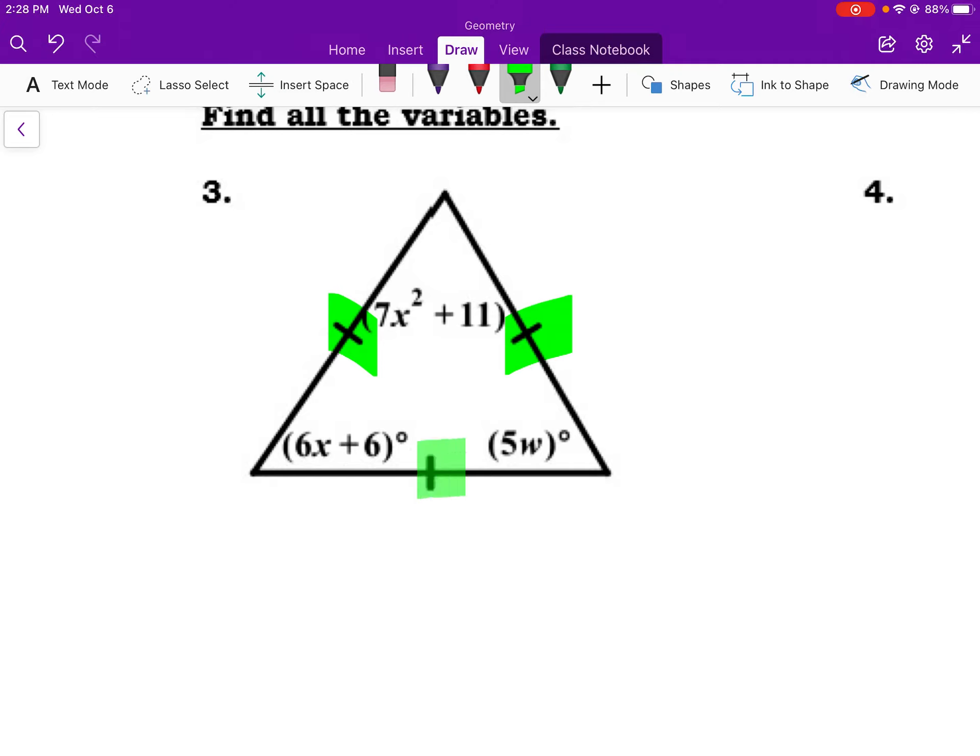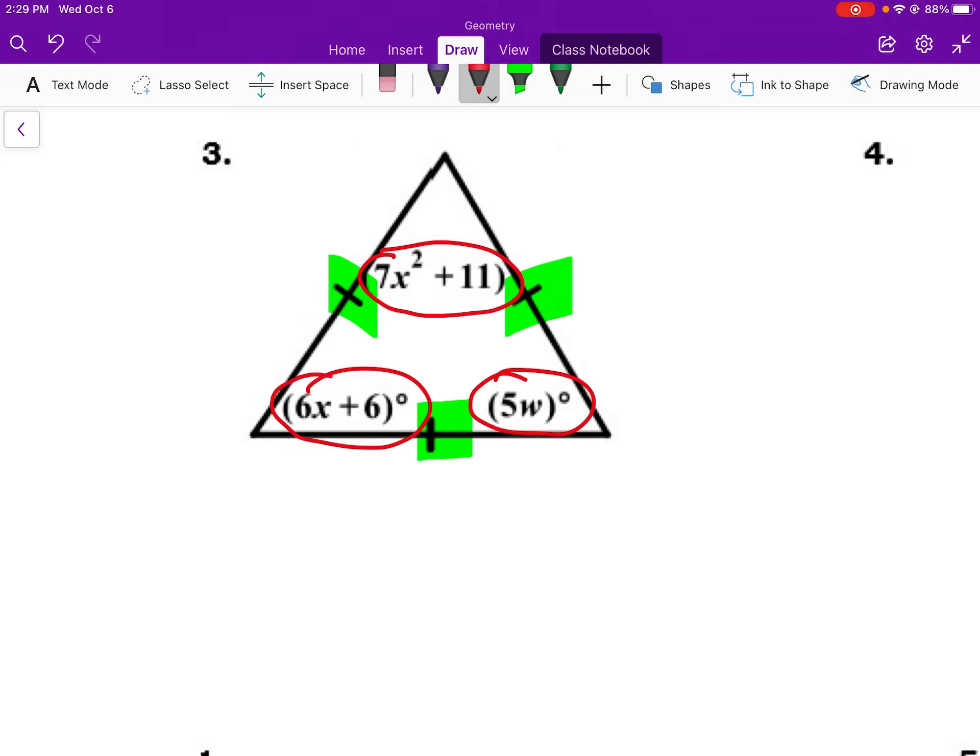All right, let's check out some that require a little more solving. Here we should notice that I have three tick marks. So all three of these sides are congruent, meaning the measures across from them have to be the same. Now, it is going to be kind of hard to relate things here. But if I see that this measurement has to be the same as this measurement, has to be the same as this measurement. Well, let's go ahead and start by relating two of them. Or I could do that, or I could just know even more simply that these all have to be 60 degrees. And so that's going to allow me to solve for x and w. So I can say 6x plus 6 equals 60. And I can say 5w equals 60.